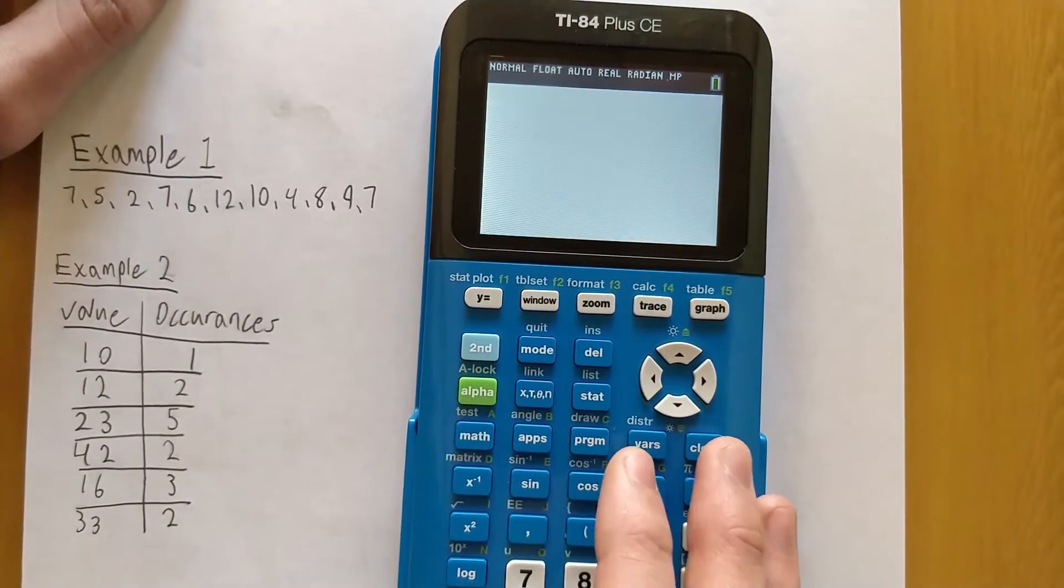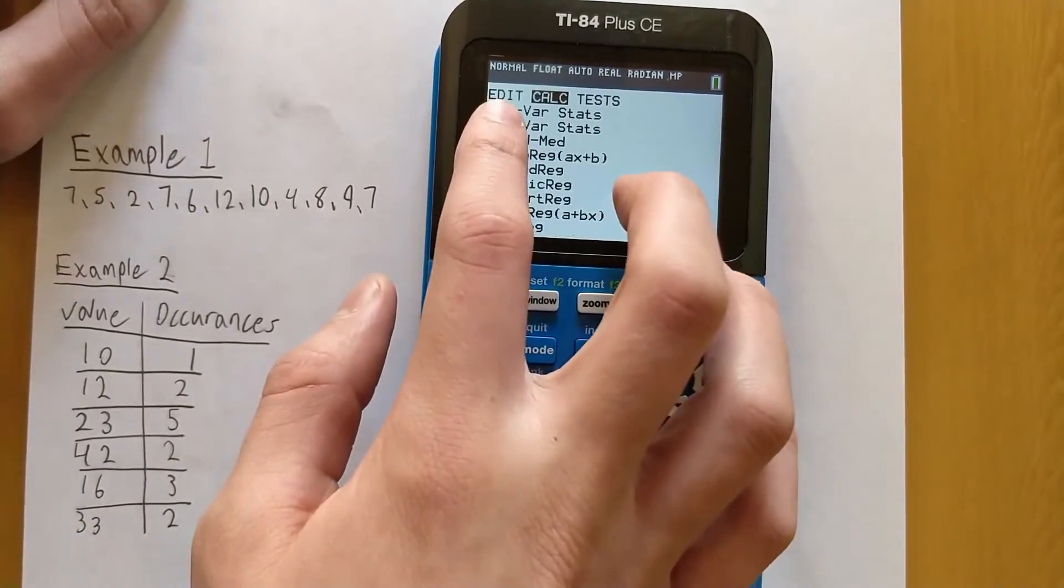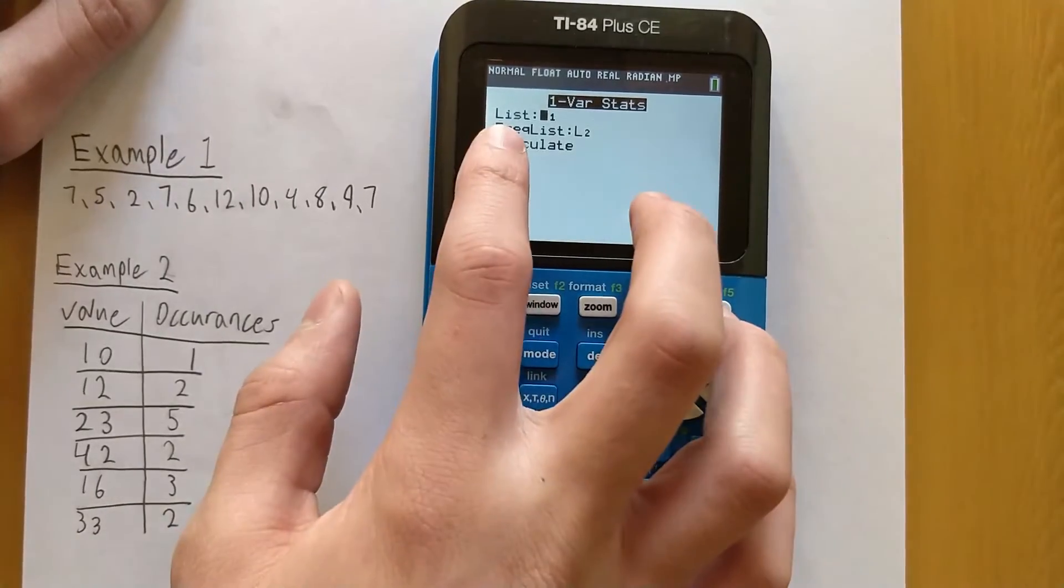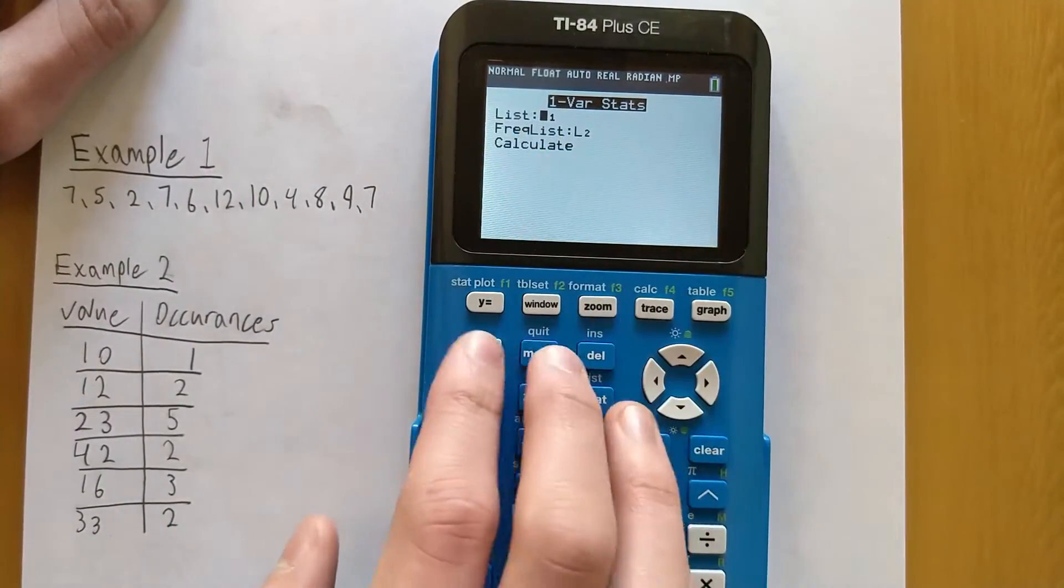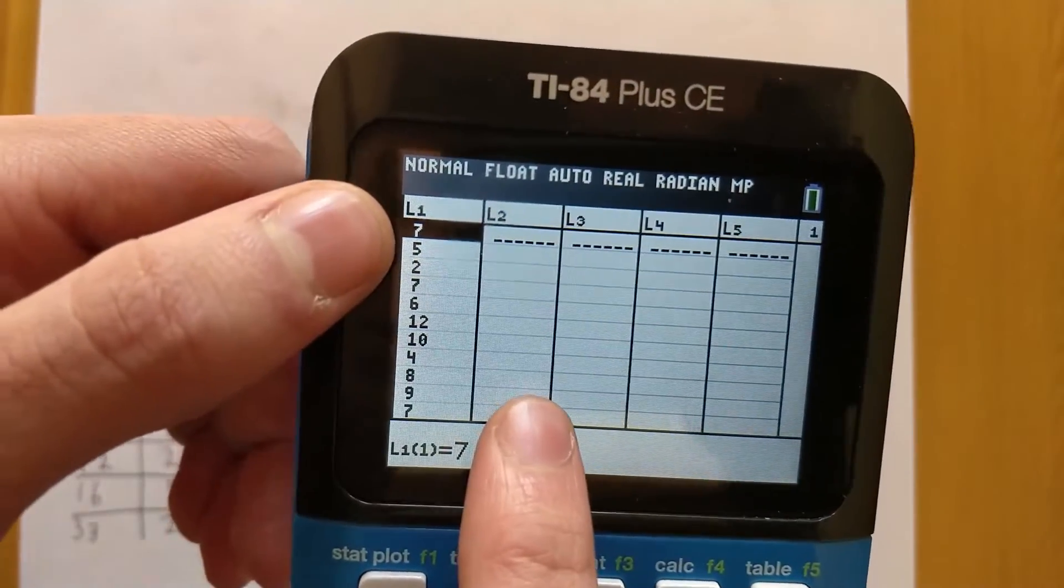So now to find the actual mean, median, and mode, we press STAT again, press the right arrow key to go to CALC, and we want to go to One-Var Stats. For the list, you type in the name of the list where you typed in your values. So I typed mine into L1, as it says right there.